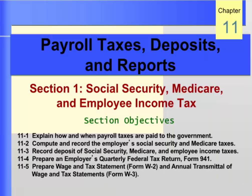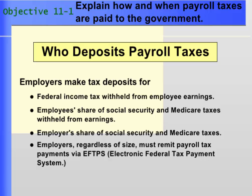Chapter 10 discussed federal taxes paid by the employee. Chapter 11 discusses employers' payroll taxes and explains how to complete and file the required tax returns and reports. Section 1 introduces Social Security, Medicare, and employee income tax. The first objective of this chapter explains how and when payroll taxes are paid to the government. The payroll register is the source of information about wages subject to payroll taxes. Businesses also pay payroll taxes for Social Security, Medicare, and unemployment. Employers, regardless of size, must remit payroll tax payments via the EFTPS, Electronic Federal Tax Payment System.